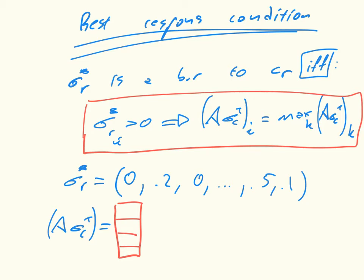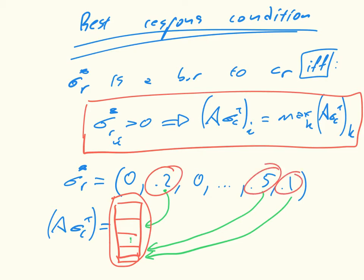All our theorem is saying is that if the value of sigma R star is greater than zero, then the utility of that given strategy is equal to the maximum of all the values in here. In other words, every value that's played with a non-zero probability must actually have the same value, and it must be the biggest value.